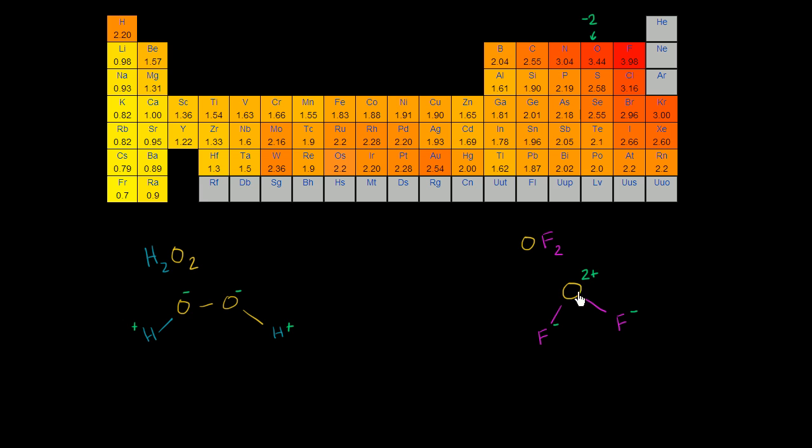But it has an oxidation state of positive two. Oxygen, the thing that likes to oxidize other things, it itself has been oxidized by fluorine. So this is a pretty dramatic example of how something might stray from its typical oxidation state or its typical oxidation number.